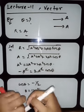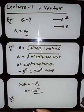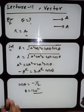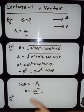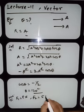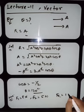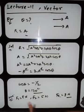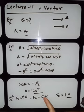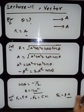Homework: Two forces f1 = 8 N and f2 = 5 N are inclined at what angle so that the resultant force is 2 N? Solve this question and send it in the group.